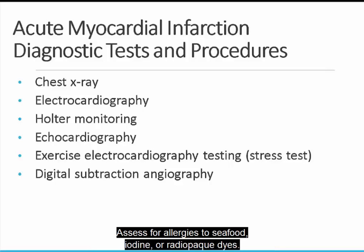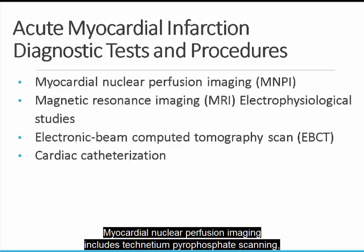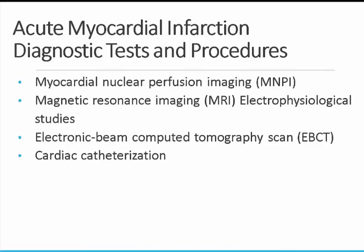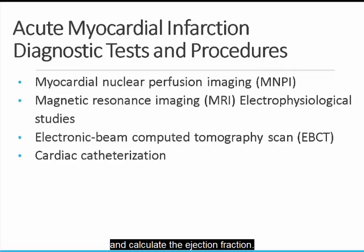Assess for allergies to seafood, iodine, or radiopaque dyes. Myocardial nuclear perfusion imaging includes technetium pyrophosphate scanning, thallium imaging, and multi-gated cardiac blood pool imaging, and can evaluate cardiac motion and calculate the ejection fraction.